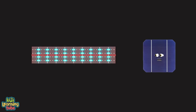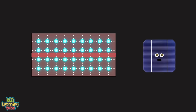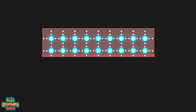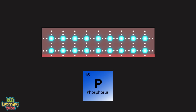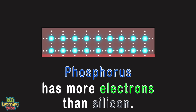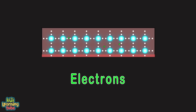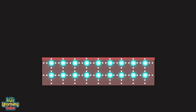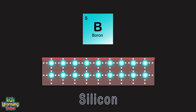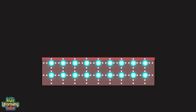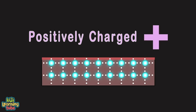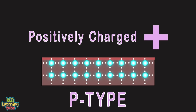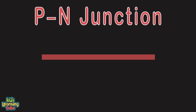In a solar cell there are three layers. The top layer contains silicon and a tiny amount of phosphorus. Phosphorus has more electrons than silicon, making this area more conductive. This layer is negatively charged and is called the n-type. The bottom layer contains silicon and boron, which has fewer electrons than silicon — it is positively charged and called the p-type layer. The middle layer is called the p-n junction.